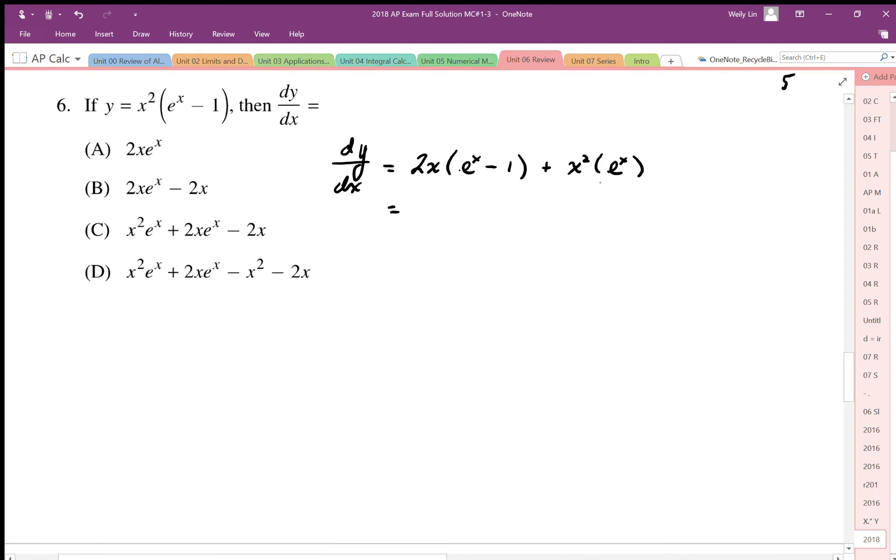So we end up with x squared e to the x plus 2x e to the x minus 2x as our solution. So this ends up being C.